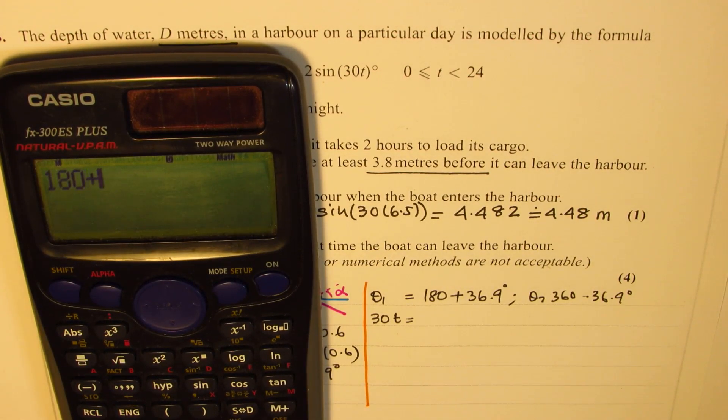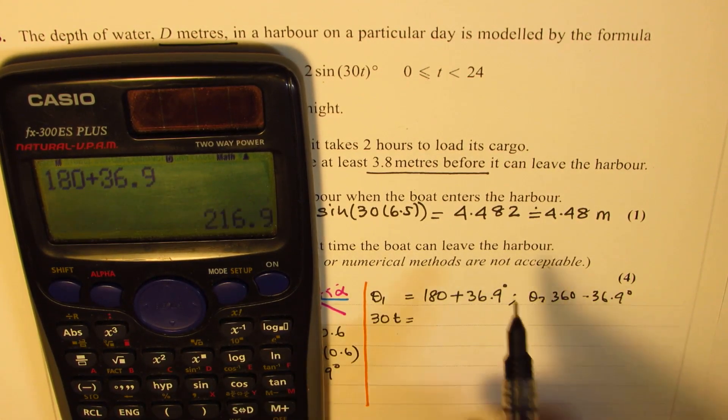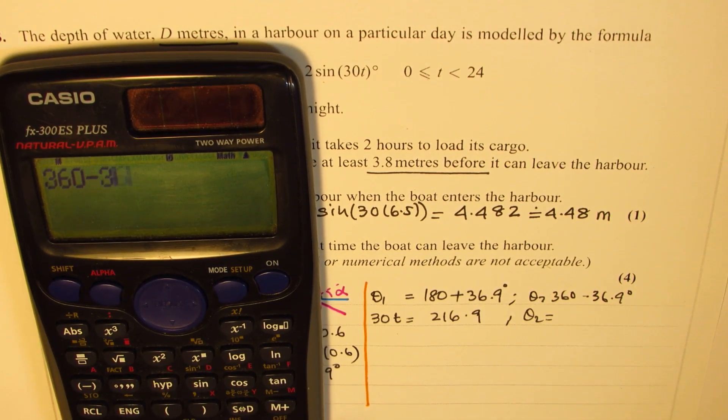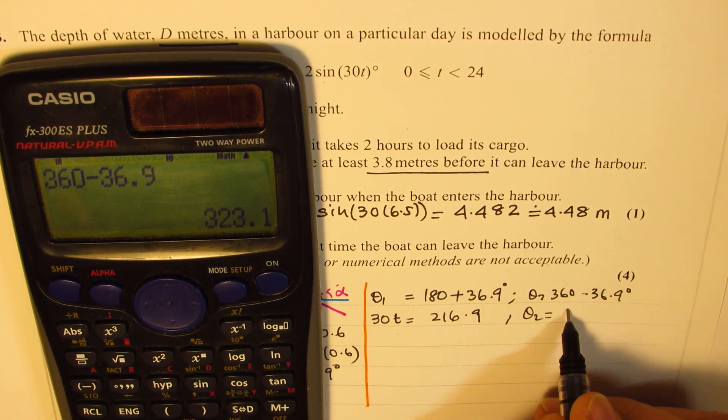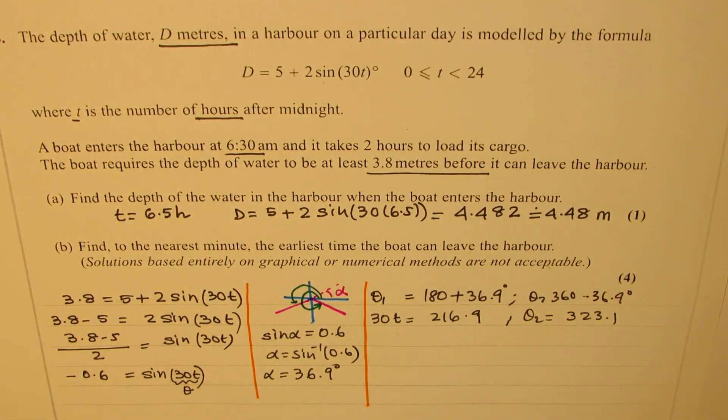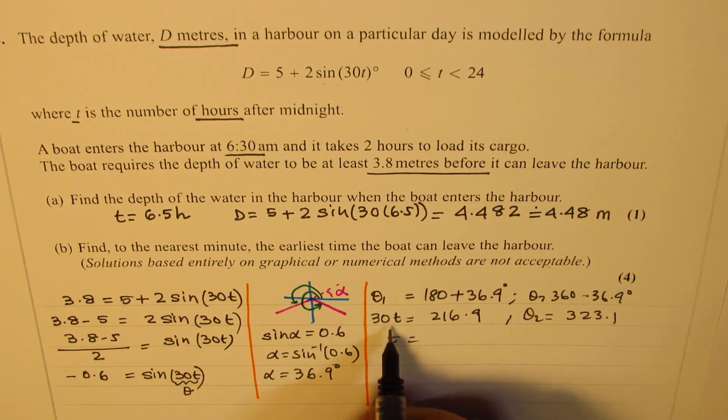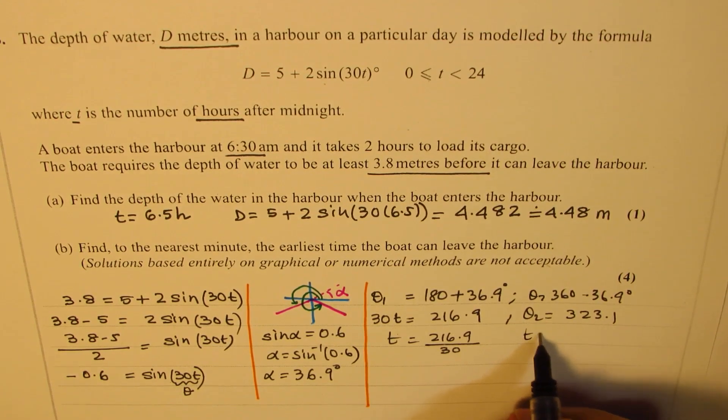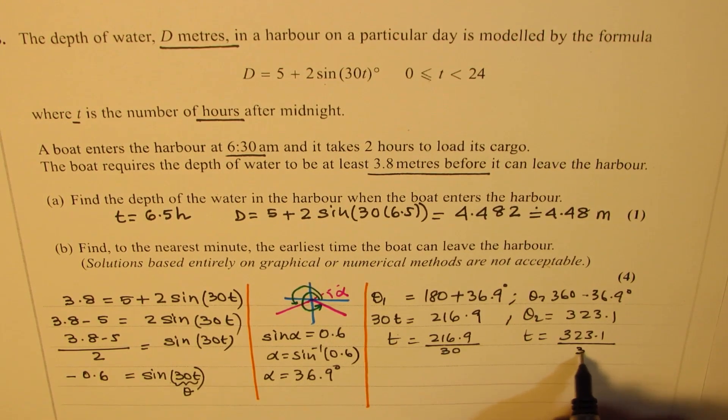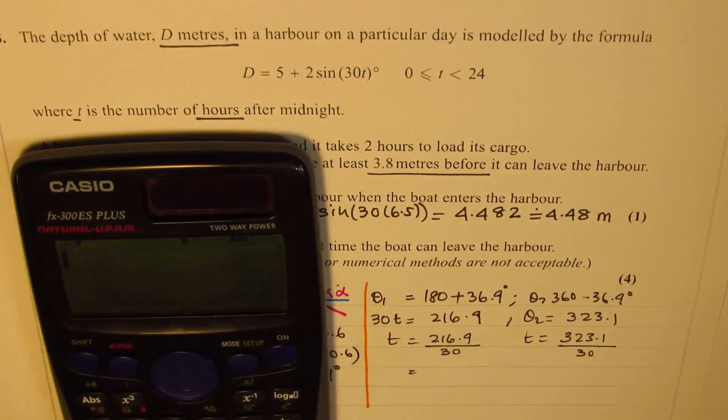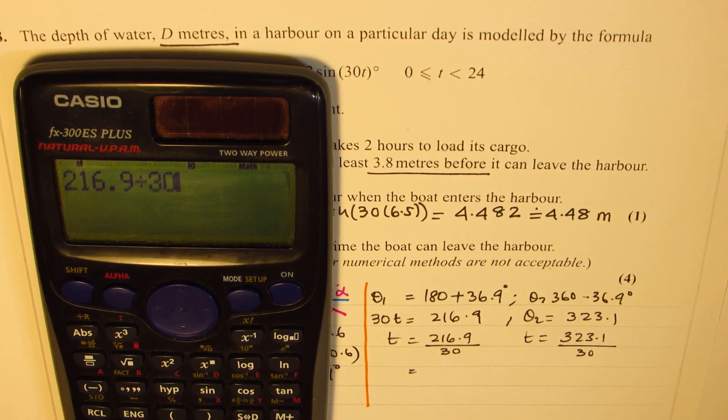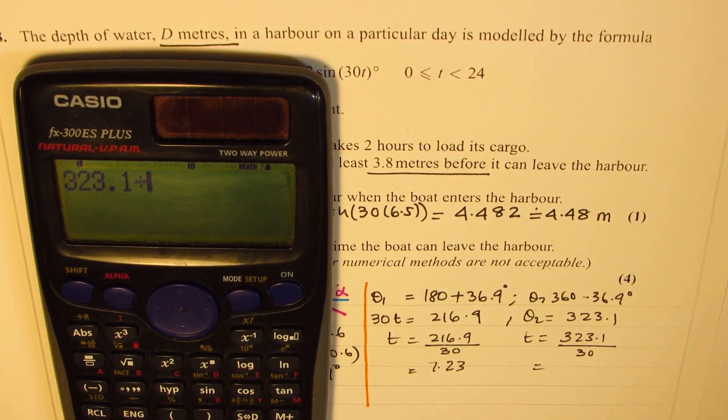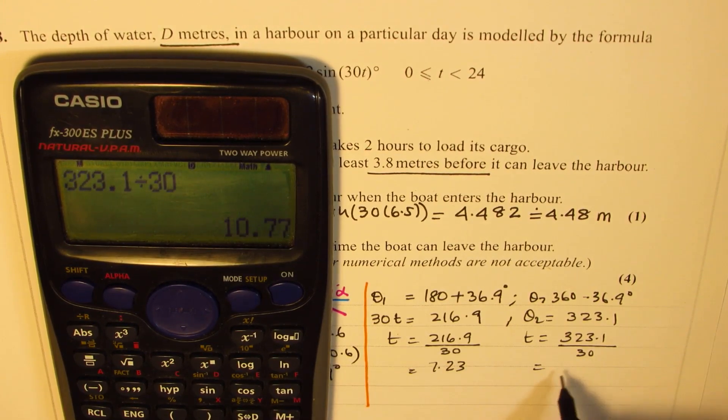So let's find these angles. It is 180 plus 36.9 which is 216.9, and here we get the other angle as equal to 360 minus 36.9. It gives us 323.1. Now after dividing by 30 we get the value of t. So 216.9 divided by 30 gives us 7.23. Here we have 323.1 divided by 30 is 10.77.